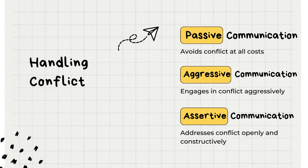Handling Conflict — Passive Communication: passive communicators often avoid conflict at all costs, which may result in unaddressed issues and unmet needs. Their reluctance to confront problems directly can lead to a buildup of dissatisfaction over time. Aggressive Communication: aggressive communicators engage in conflict aggressively, potentially escalating situations and creating a hostile environment, straining relationships and hindering constructive problem-solving. Assertive Communication: assertive communicators address conflict openly and constructively, approaching disagreements with a willingness to understand others' perspectives and work collaboratively towards resolutions.